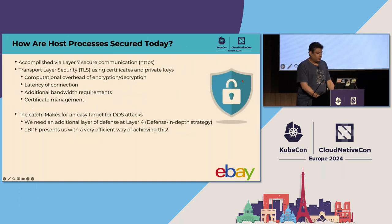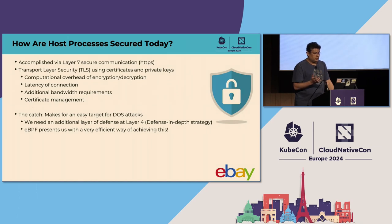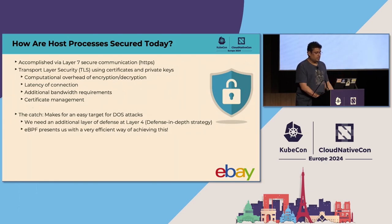How are host processes secured today? It is accomplished at layer 7 through cryptographic mechanisms using TLS. Identities are established using certificates, and communication is secured by establishing a shared session key to authenticate and encrypt data transmitted between them. Layer 7 security is sufficient, so what's the catch? Cryptographic functions are not cheap — there is computational overhead of encryption and decryption, increased latency, and increased bandwidth needs. This makes it an easy target for DoS attacks. The defense-in-depth strategy is to have an additional layer of security that drops malicious traffic early. That is what eBPF brings to the table.